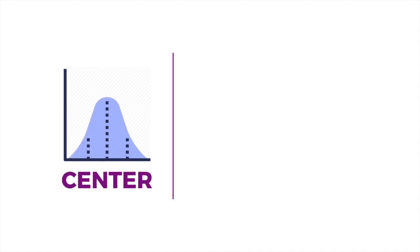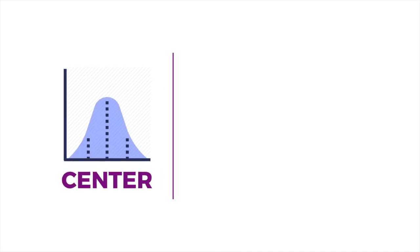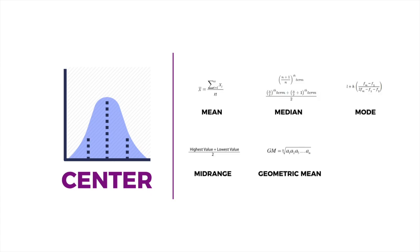We have six different measures of center: mean, median, mode, mid-range, geometric mean, and trimmed mean. We will be examining each of these measures of center.